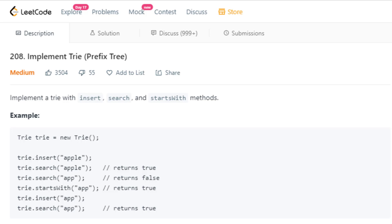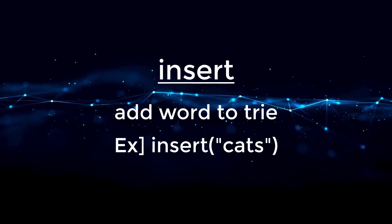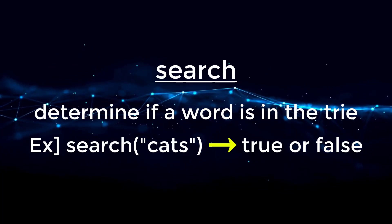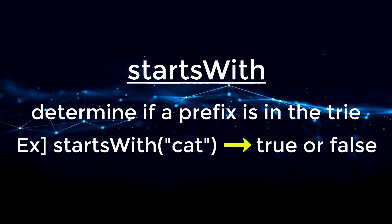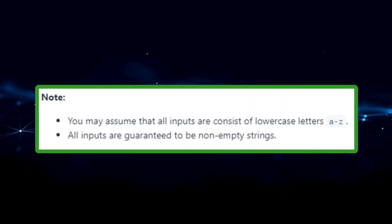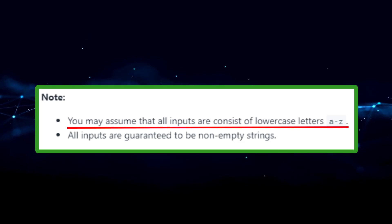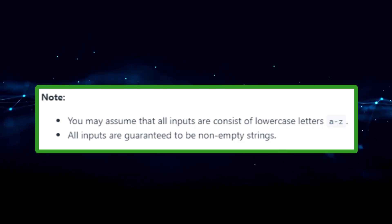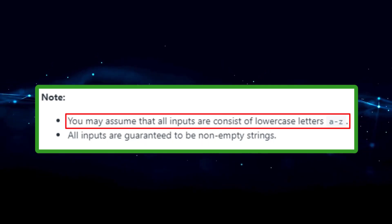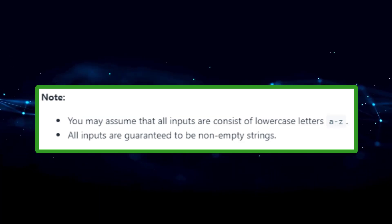We need to implement the following functions: insert, search, and starts with. Our insert function will just insert a word inside of our Trie. The search function will determine if a word is present inside of the Trie. And the starts with function will determine if a certain prefix is inside of it. The problem notes say all inputs consist of lowercase letters A to Z, and all inputs are guaranteed to be non-empty strings. The first note is very important — we don't have to worry about any other letters.